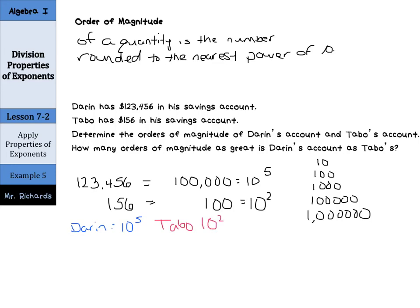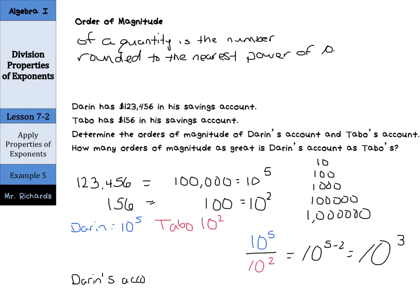Now, how many orders of magnitude as great is Darren's account as Tabo's? Since we're asking how many times as much, we're going to divide. We take 10 to the 5th divided by 10 to the 2nd, which using the quotient of powers property is 10 to the 5 minus 2, which is 10 to the 3rd. So we can say that Darren's account is 3 orders of magnitude as great as Tabo's account.